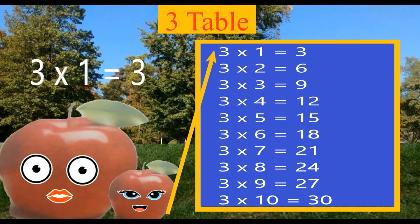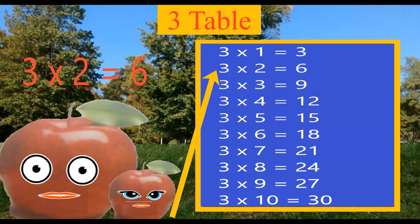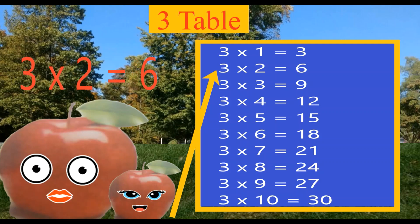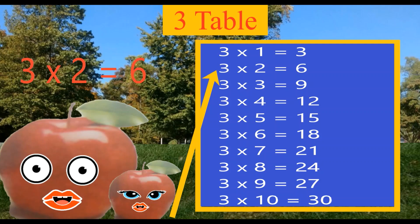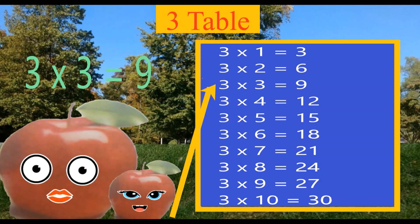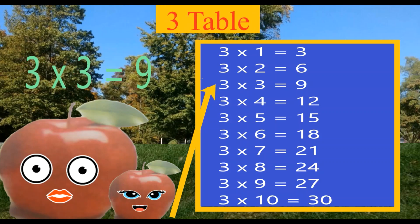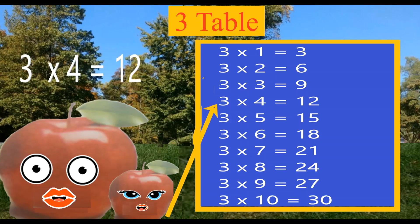Learning 3 table. 3 1's are 3. 3 2's are 6. 3 3's are 9. 3 4's are 12.